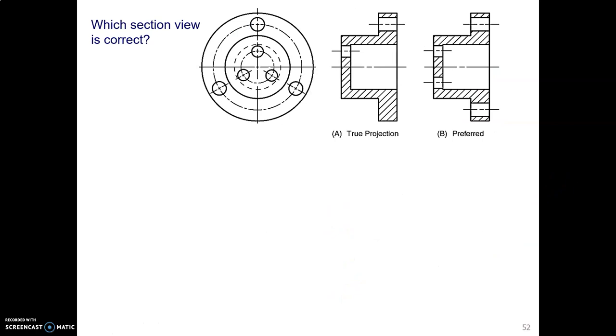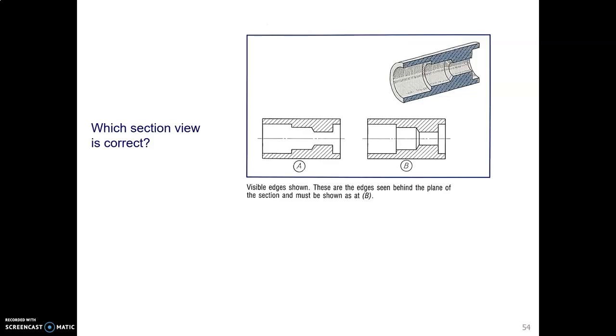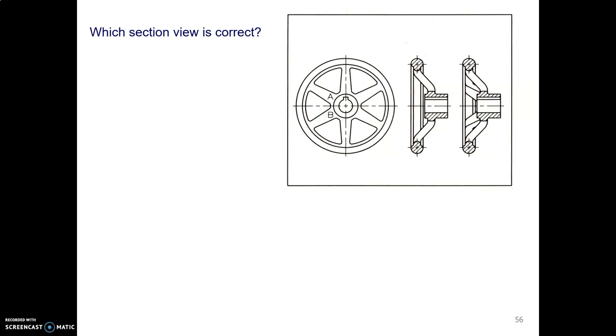How about this section view? Same idea, as if they were 180 degrees apart. How about this section view? We need visible edges. How about this section view? We need to keep it simple and not project everything that you could possibly see.